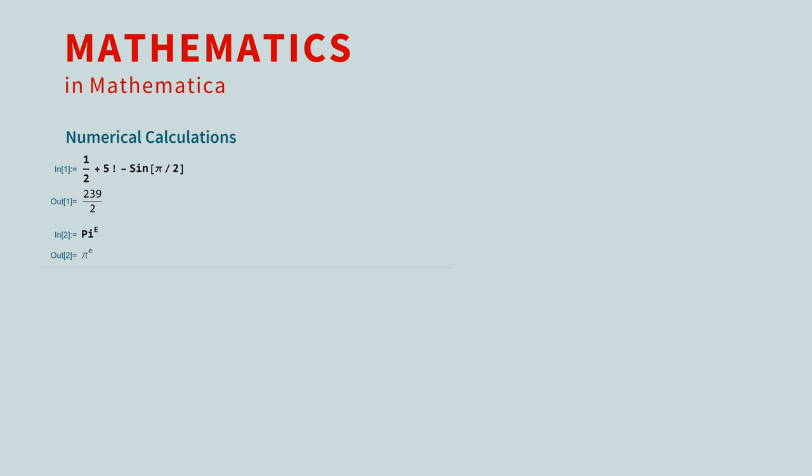Here's another calculation, pi to the e power. Once again, Mathematica returns the exact value. If you want an approximation, you can ask for it using the N function. Just enter the number, followed by the desired precision.